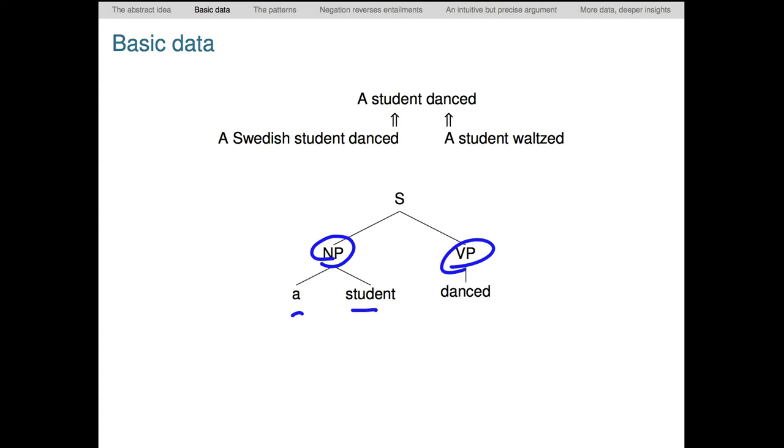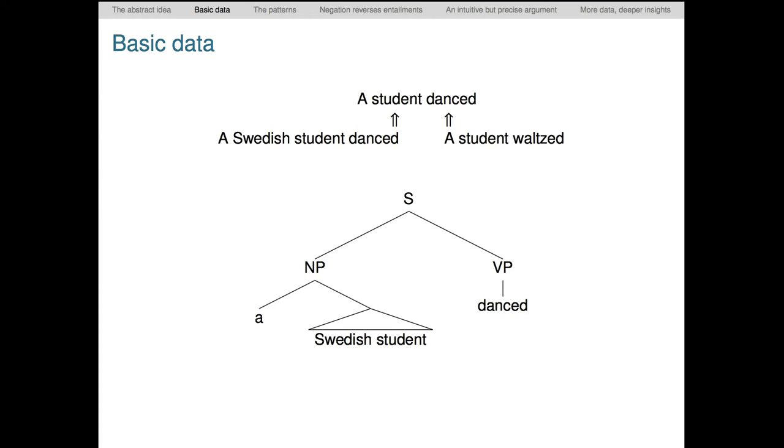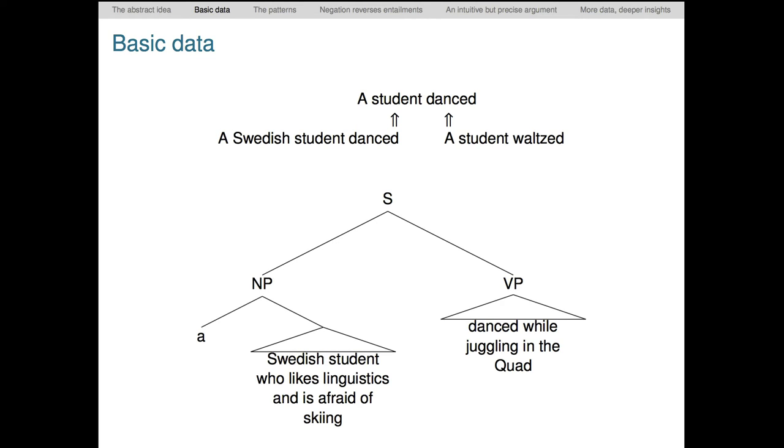Semantically, we'll see later in the term that a has two arguments. First, it combines with student, which is its restriction. And it also combines with the verb phrase, its scope. When we add in Swedish as an adjectival modifier of student, we're changing the restriction. This triangle here just means there's internal structure to this phrase that we're ignoring. When we change danced to waltzed, we're changing the scope. We can change both if we like.